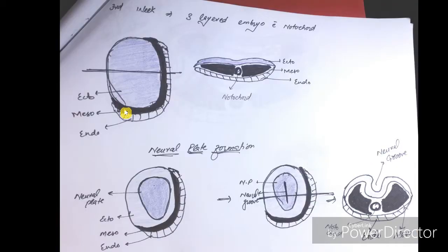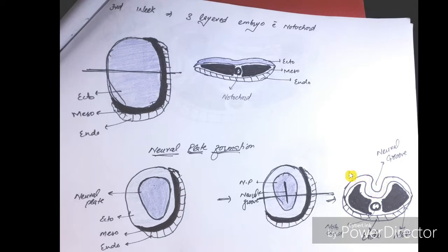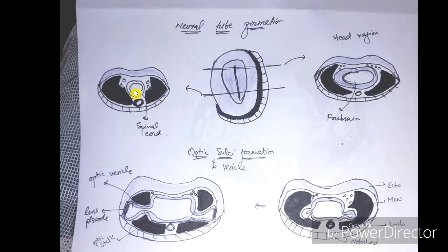In review, in the third week we have three layers: an ectoderm, a mesoderm, and an endoderm. A thickening of the ectoderm forms the neural plate, a groove appears in the neural plate, deepens, and finally the two lips of the ectoderm meet one another. This tube gets internalized and forms the neural tube. At the cephalic end, the tube expands.